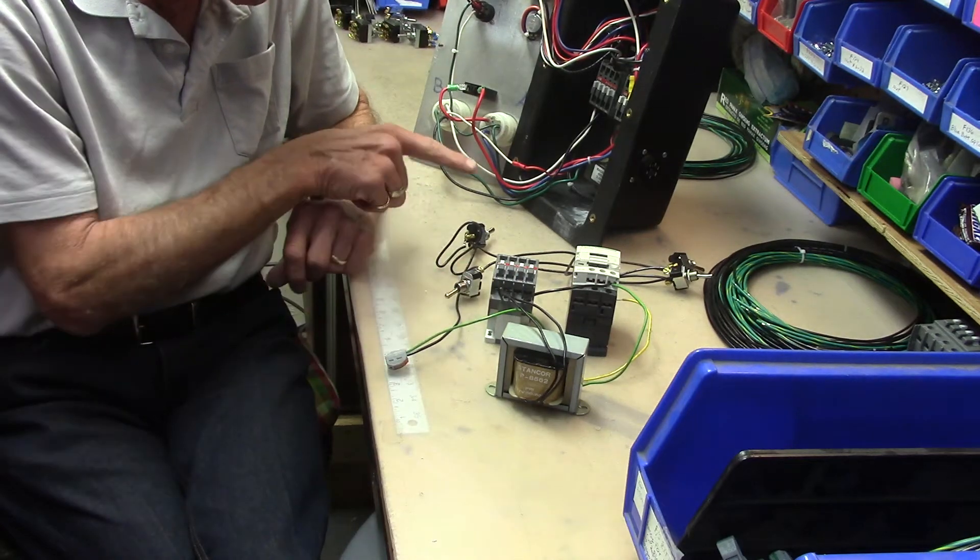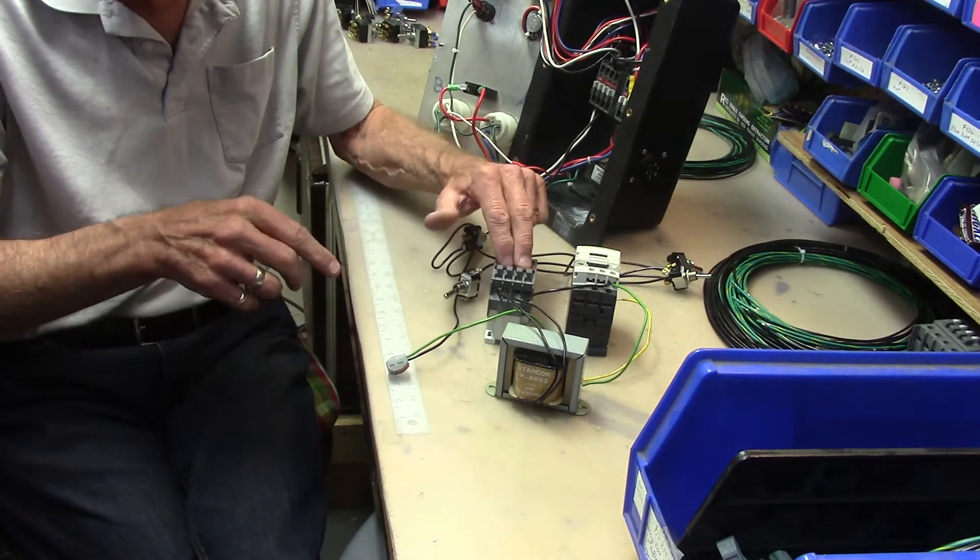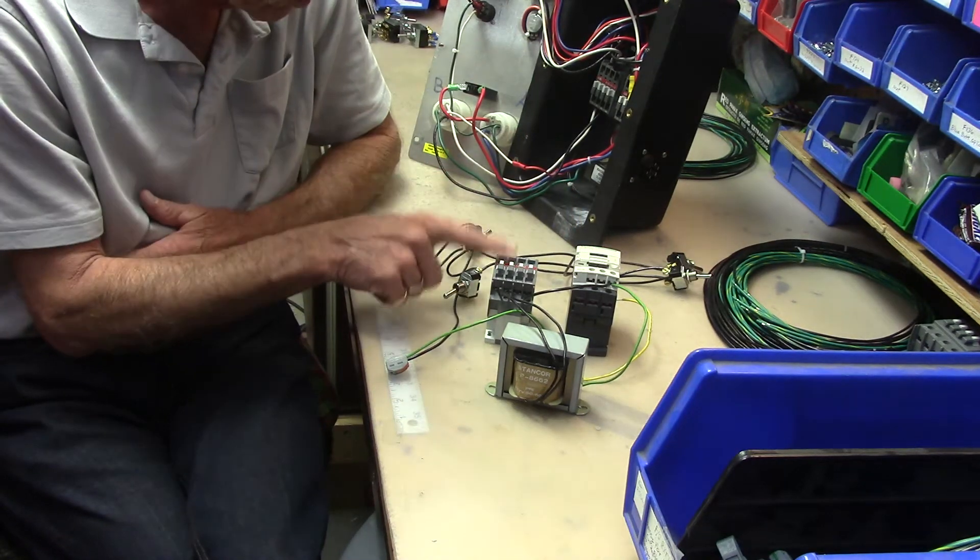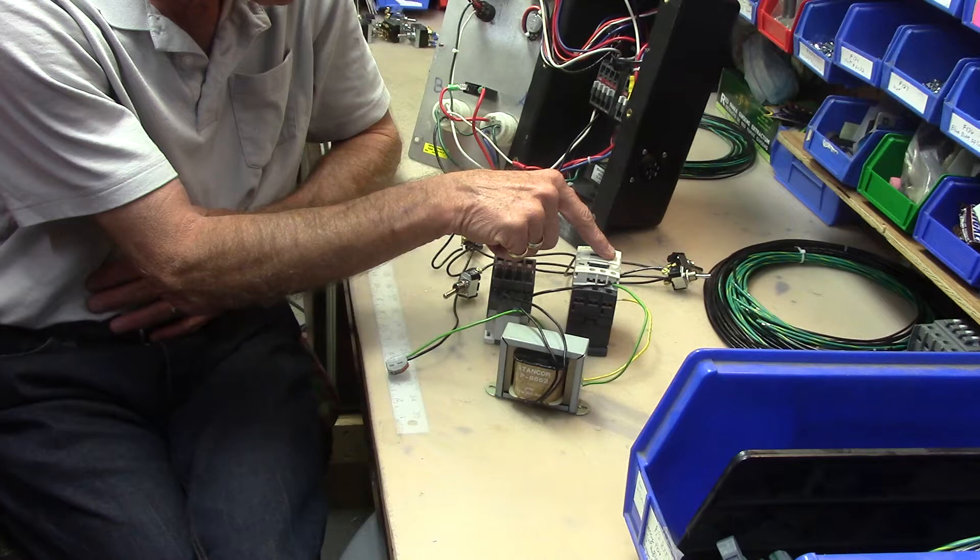Once we get power through the remote and back to it, it will then pull the contactors in and will send 110 volts to either your blower motor in this case or the agitator motor on that case.